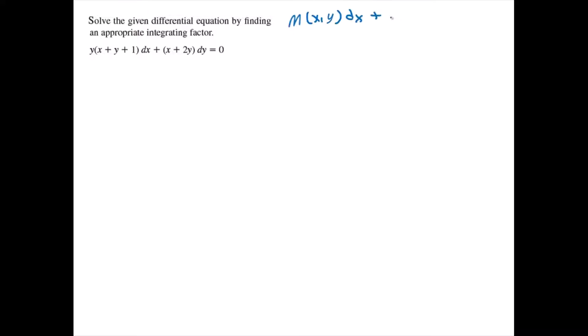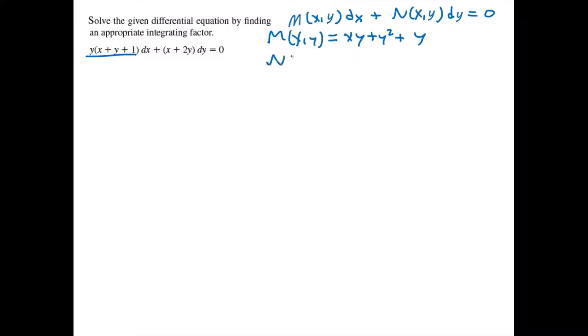We have a differential equation of the form M(x, y) dx plus N(x, y) dy equal to 0. In this case, M(x, y) is obtained by multiplying out: we get xy plus y squared plus y. And N(x, y) is simply x plus 2y.